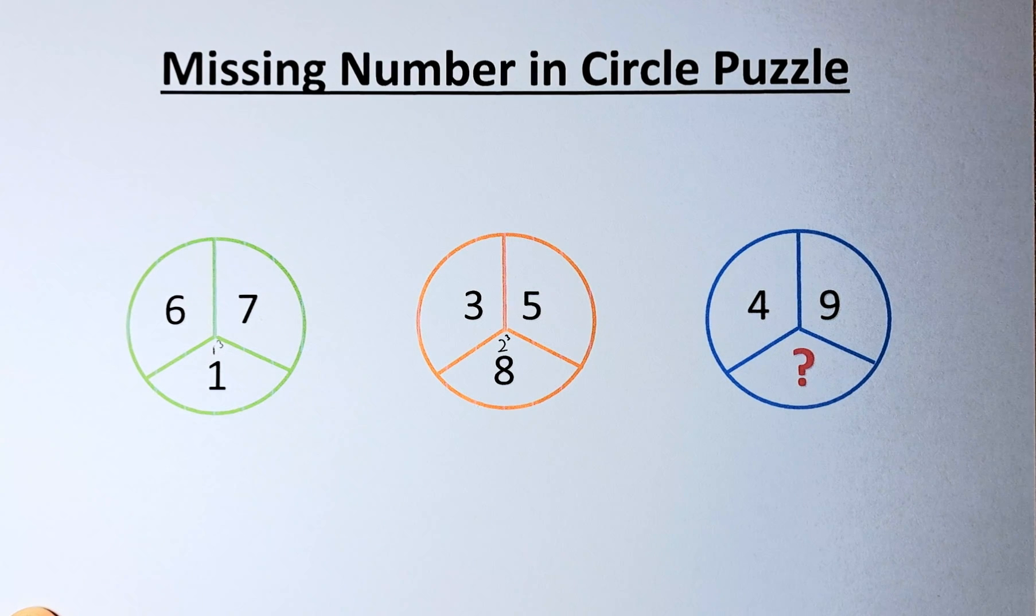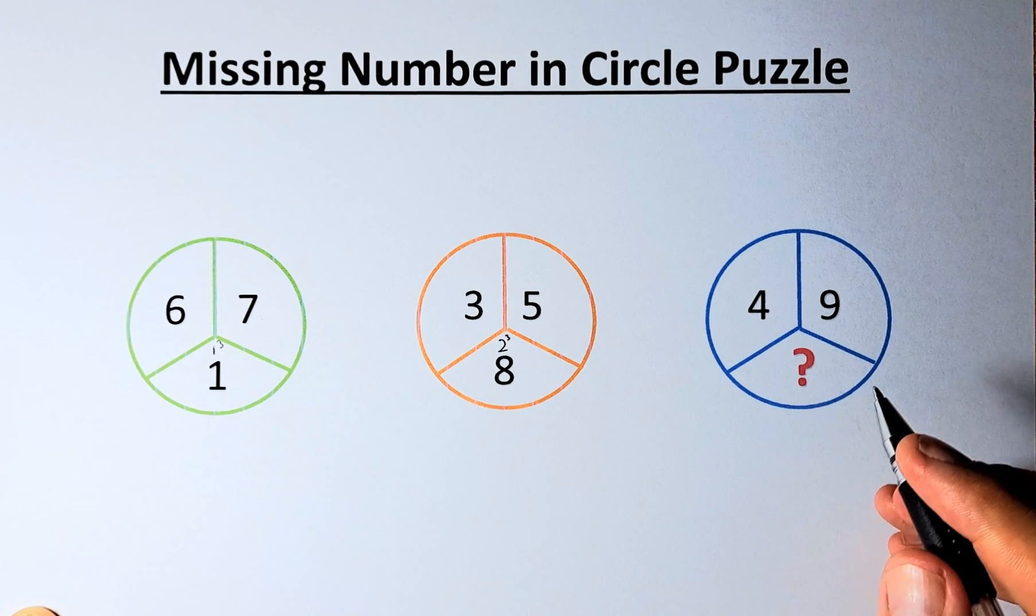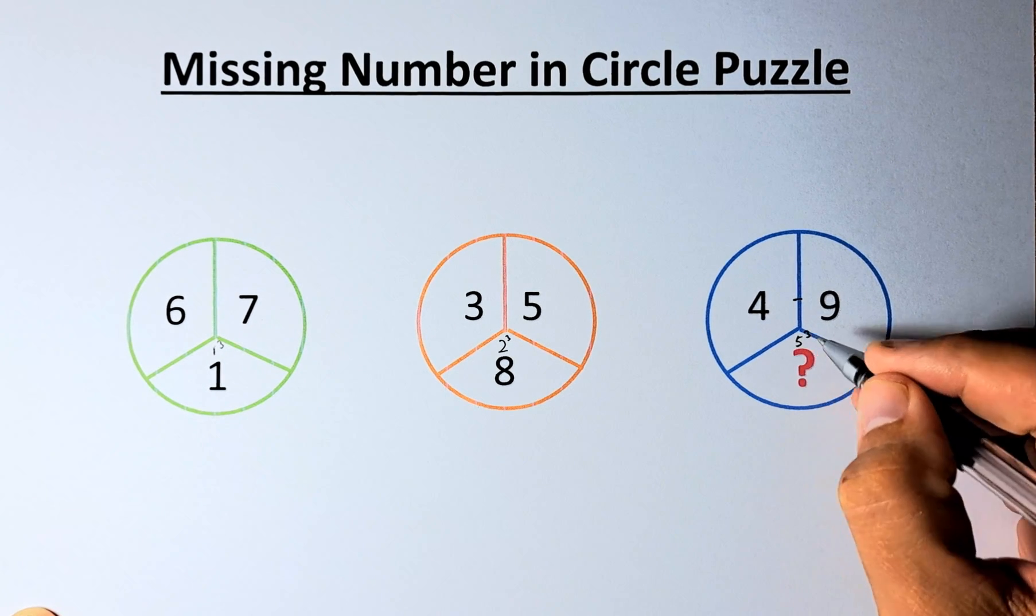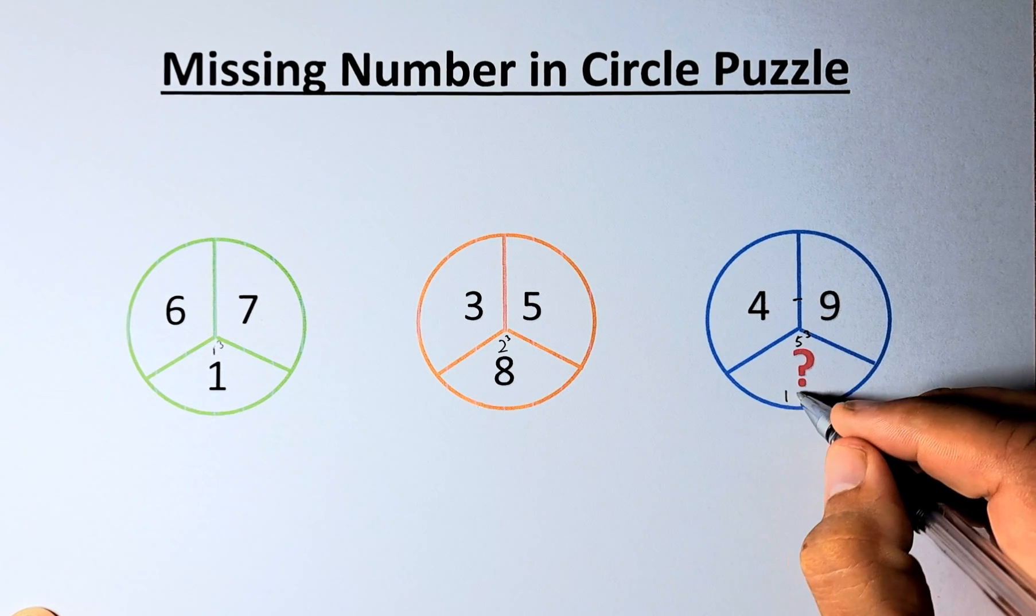And last but not least, in our puzzle of 4, 9 and a question mark. So, 9 minus 4 is going to give you a 5. And 5 cube is going to be 125.